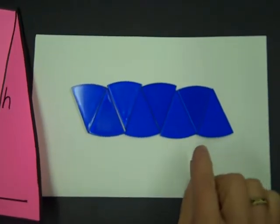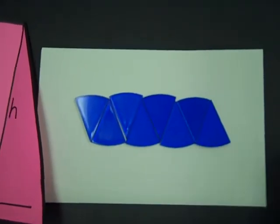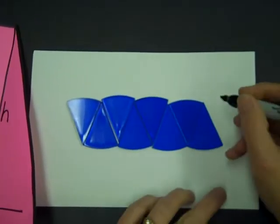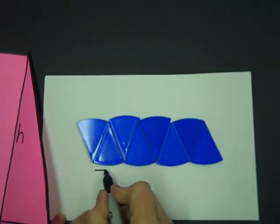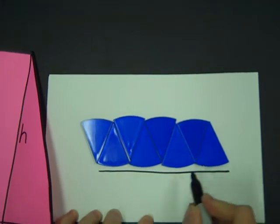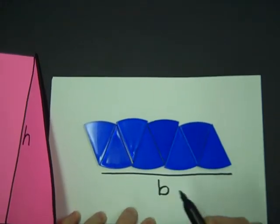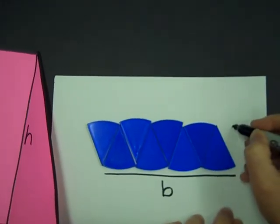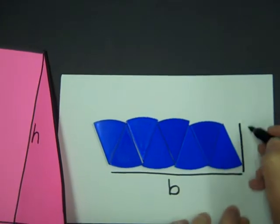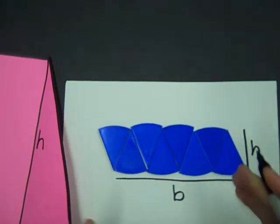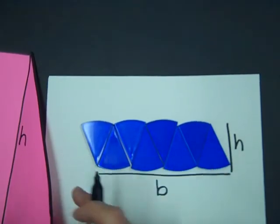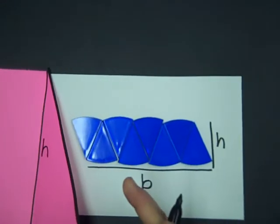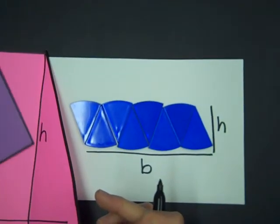And if I cut it, this would become my base. And this is my height. Now, if I cut these sectors into smaller pieces, I would see my parallelogram starting to take a form more like a rectangle.